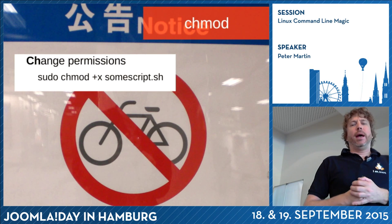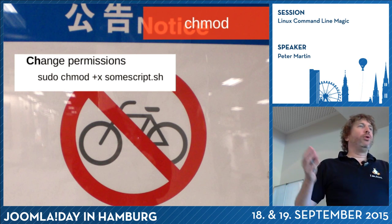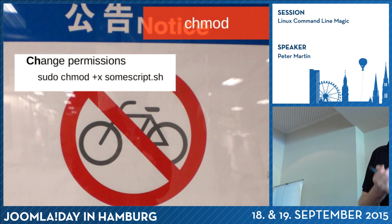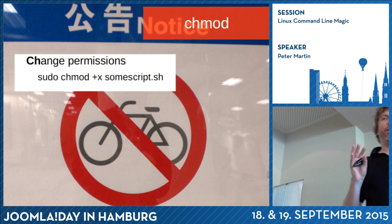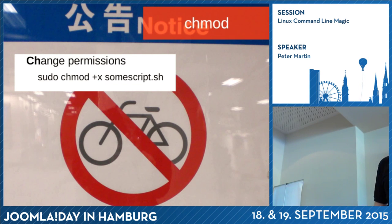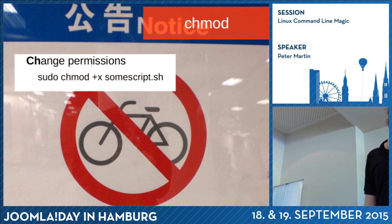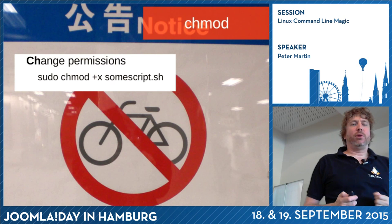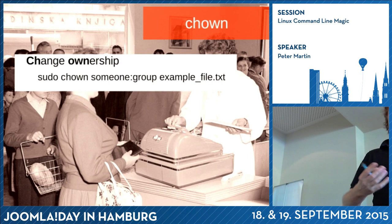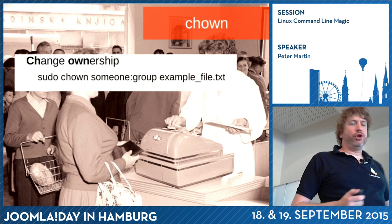When you work with Joomla with file managers, you have permissions. We all know that a Joomla website has 755 for folders and 644 for files, except the configuration which should be 444. If you want to change permissions, you can use the chmod command. And ownership — every file has an owner — you can change it with the chown command.